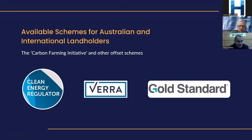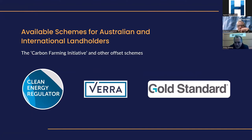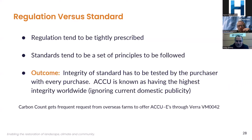Looking at available schemes for Australian and international landholders: in Australia we have a system regulated by the Clean Energy Regulator. Overseas there are a series of standards with different agencies such as Vera and Gold Standard. New Zealand is probably the only other one that has a regulated scheme that picks up offsets. Regulation tends to be tightly prescribed — a ton of carbon in one area should equal a ton of carbon on another farm, and should equal plantation and human-induced re-vegetation, though there are some differences in quality.